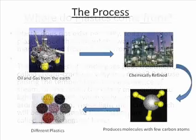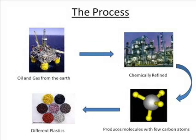Oil and gas is usually removed from the earth or from under the sea. It's chemically refined in a refinery, producing molecules with a few carbon atoms, which then allow us to make different types of plastics.